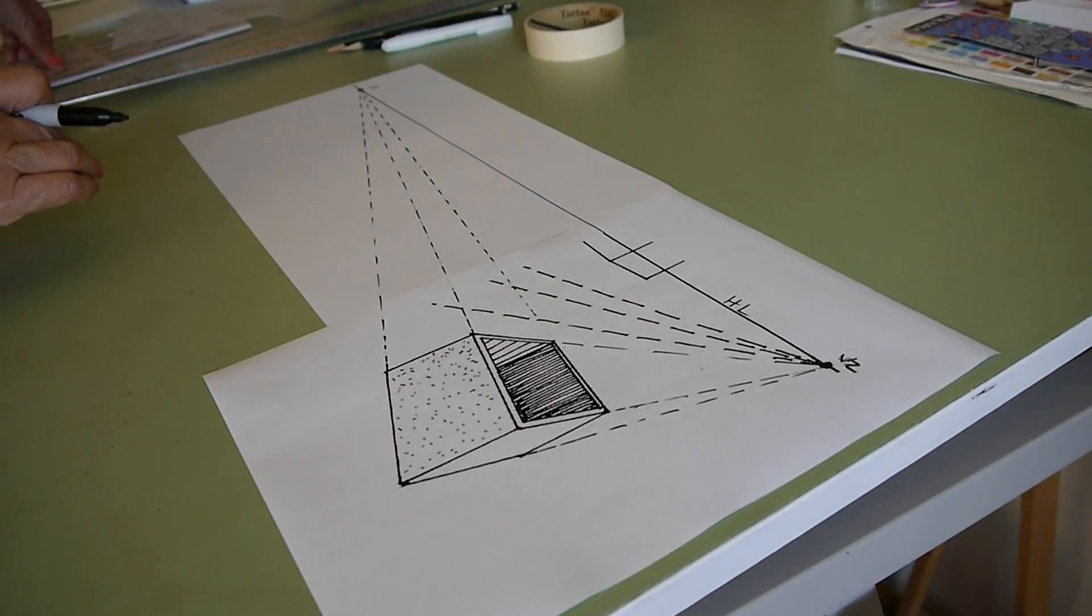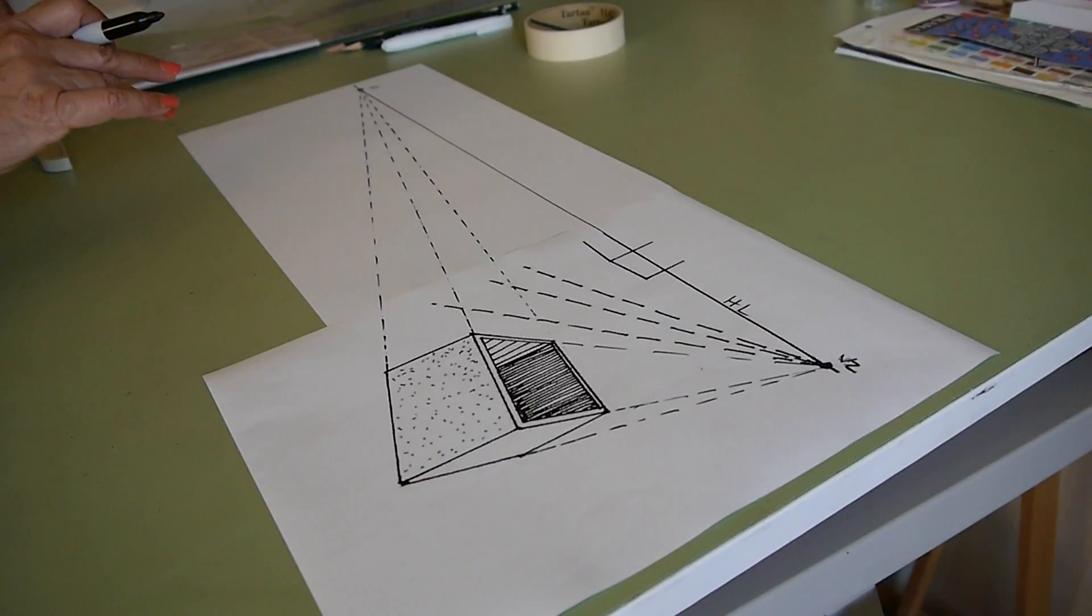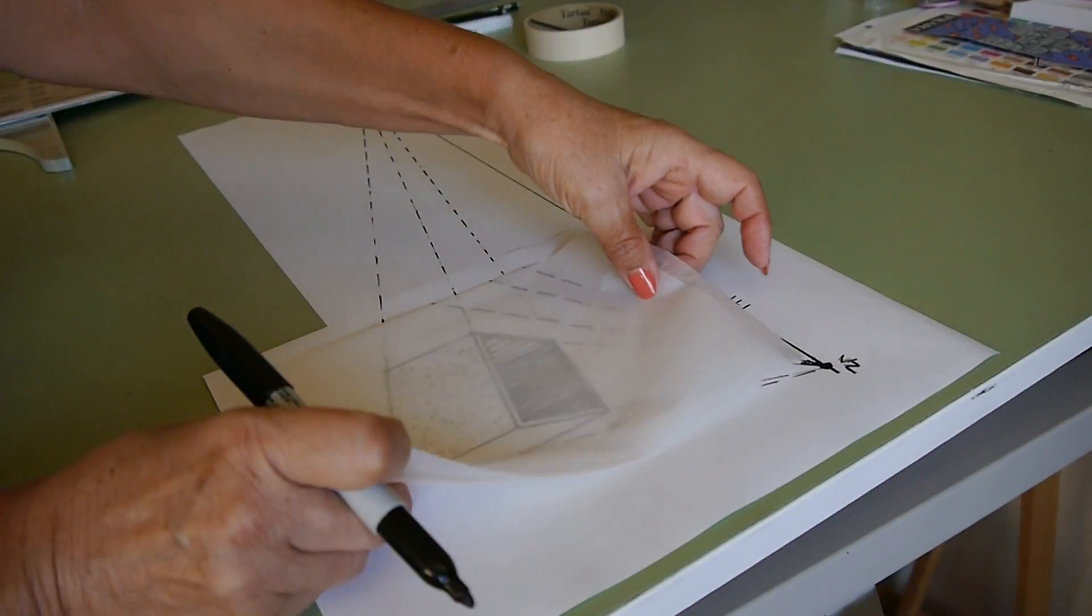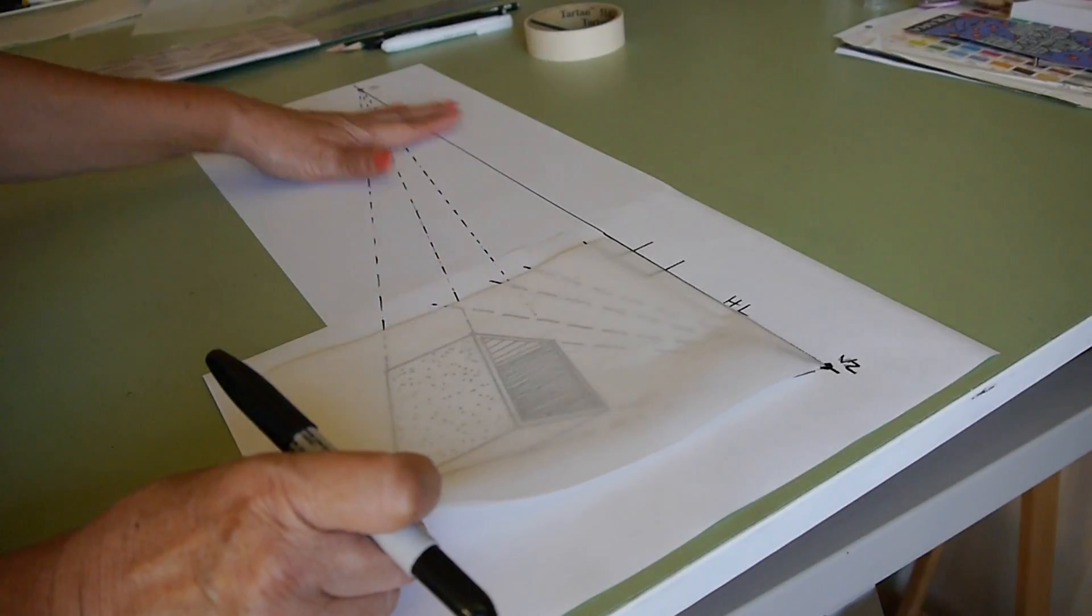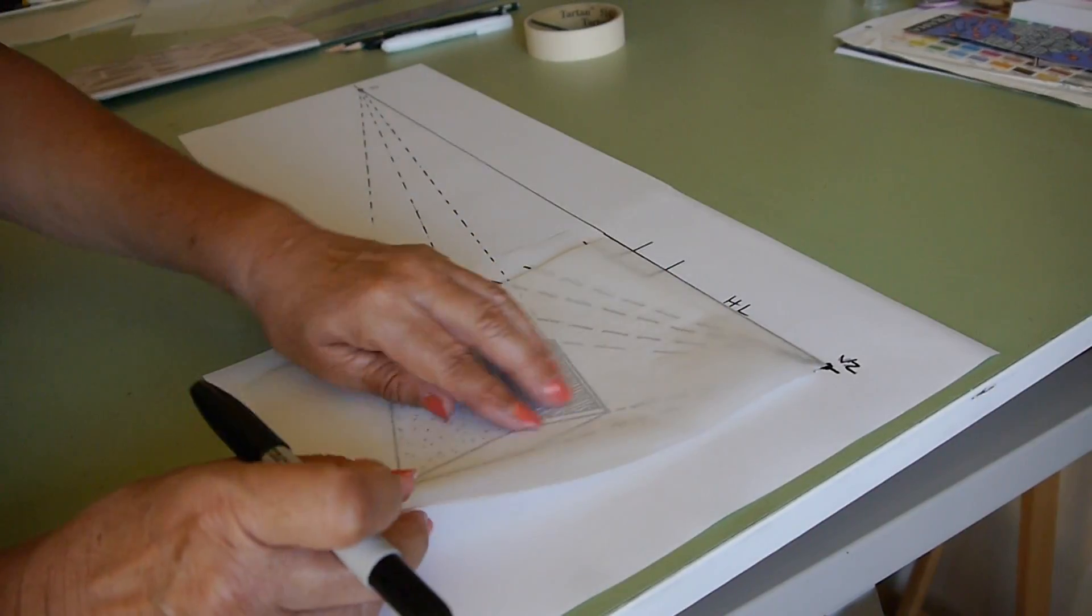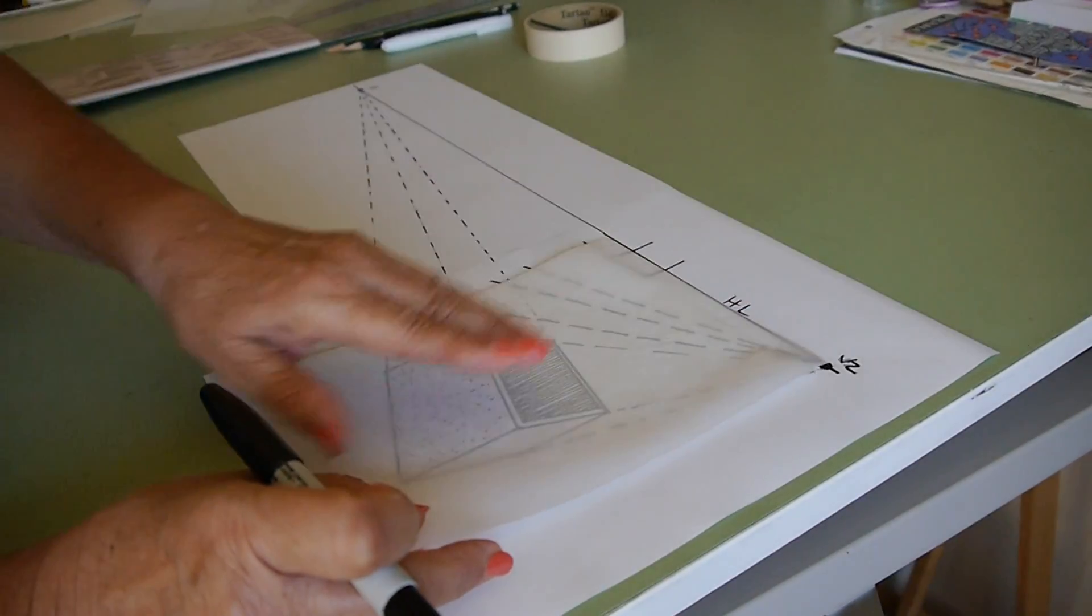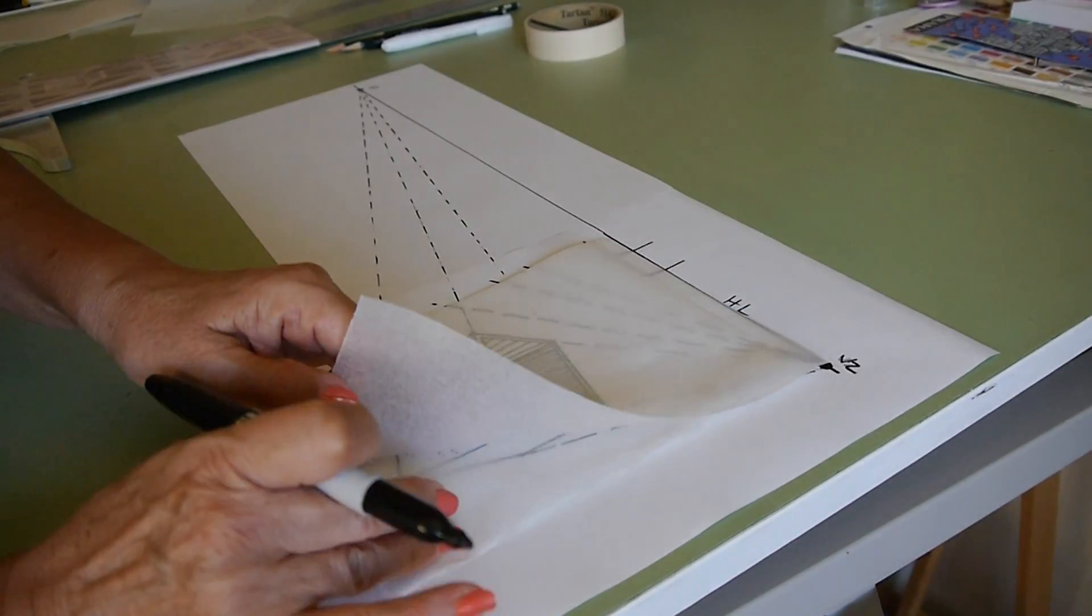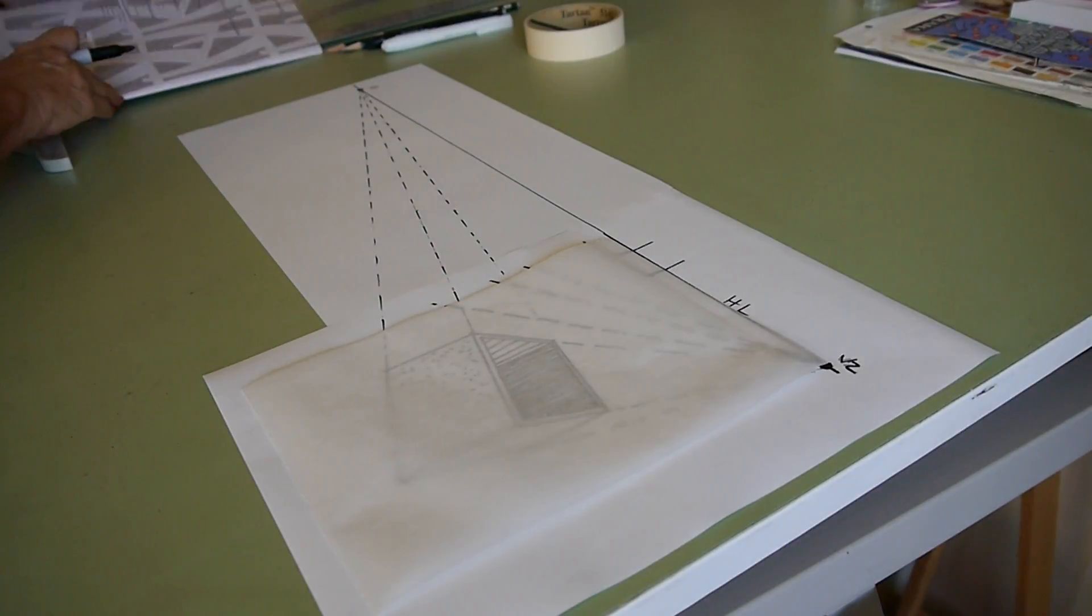Now what I normally will do after this, I will put a couple of tracing paper on top, I'll make sure I tape the paper. Now I have the vanishing point one and two.